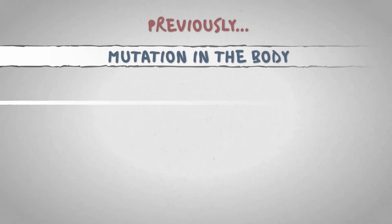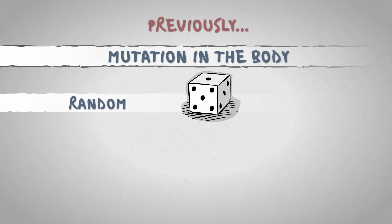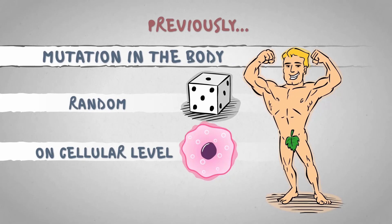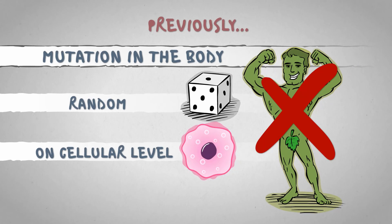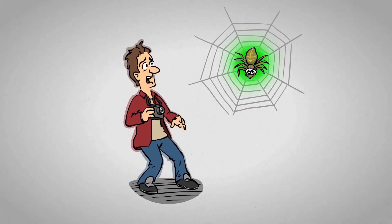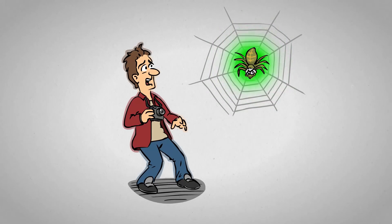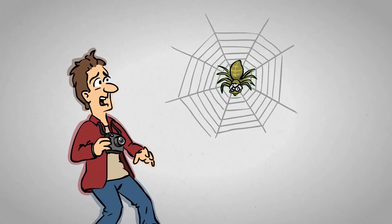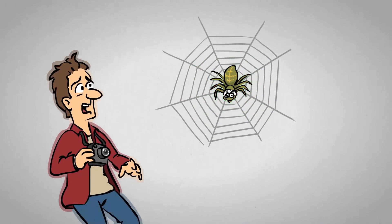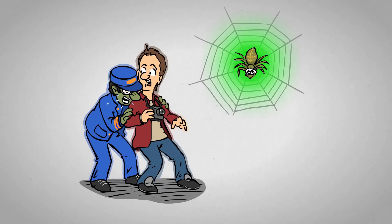Previously, we discussed that mutation happens randomly on a cellular level. Individual cells of your body can and do mutate, but all your cells will never mutate at the same time in the same way — not even if you visit the super lab of your classmate's evil dad and get bitten by a genetically modified train conductor.